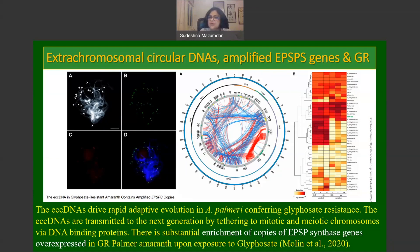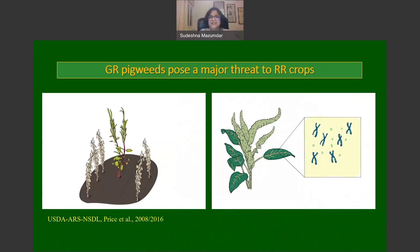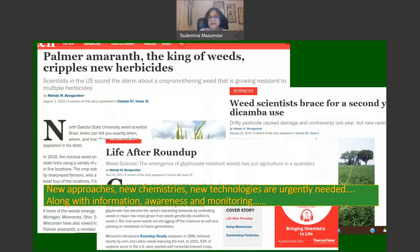A cartoon summary shows how a glyphosate-resistant pigweed survives in the presence of other weeds killed by glyphosate, because of extrachromosomal circular DNA associated with the plant DNA that contains multiple copies of the EPSP synthase gene.